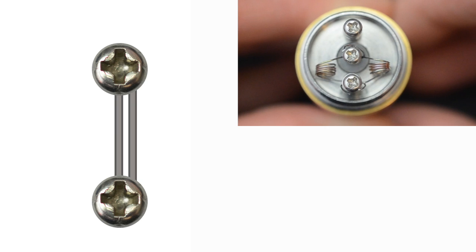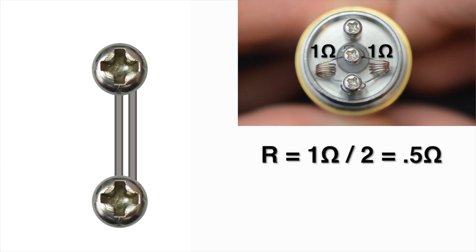Here's how it looks on a dripper. If we have a single 1 ohm coil, the resistance is just simply 1 ohm. If we add another 1 ohm coil in parallel, the current will flow through two wires, so the total resistance is reduced to 0.5 ohms.